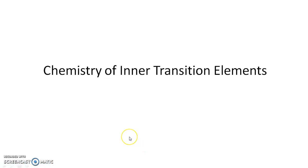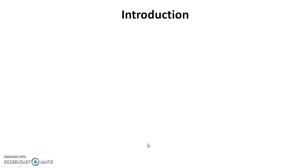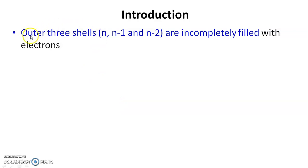In this video I am going to start chemistry of inner transition elements. The inner transition elements are the elements that have outer three shells — that is outermost, penultimate, and pre-penultimate shells — incompletely filled with electrons. The outer three shells are n, n-1, and n-2. n is the outermost shell, n-1 is the penultimate shell, and n-2 is the pre-penultimate shell.